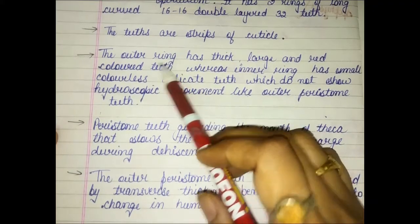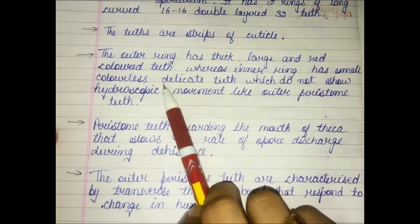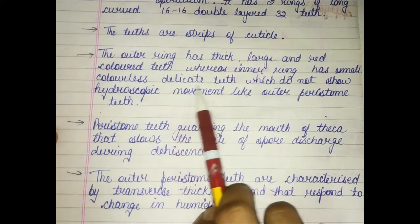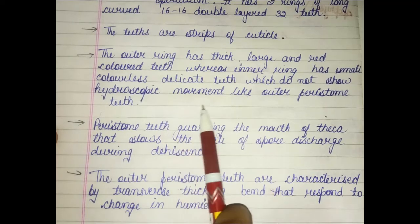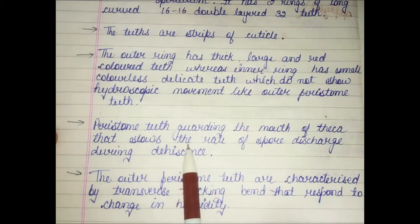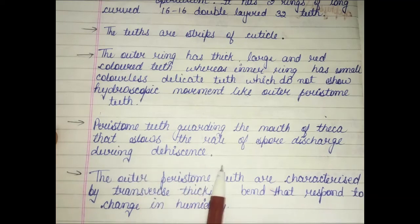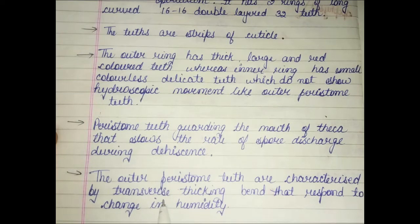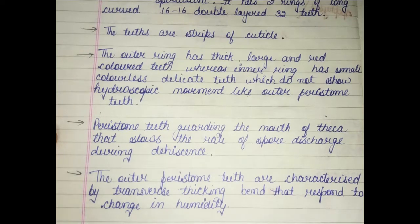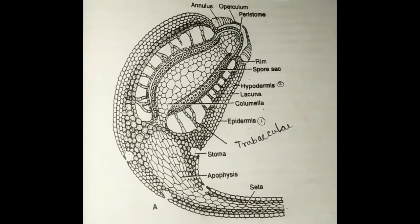The peristome teeth are underneath the operculum. It has two rings of long curved teeth — 16 in the outer ring and 16 in the inner ring, giving 32 teeth total in two layers. The teeth are striped with cuticle. The outer ring has thick, large, and red-colored teeth, whereas the inner ring has small, colorless, delicate teeth which do not show hygroscopic movement like the outer peristomic teeth. The peristome teeth guard the mouth of the theca and regulate the rate of spore discharge during dehiscence.